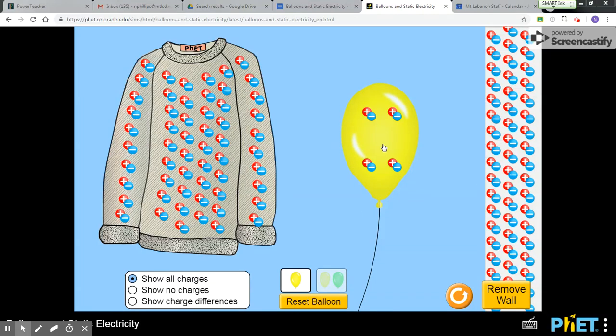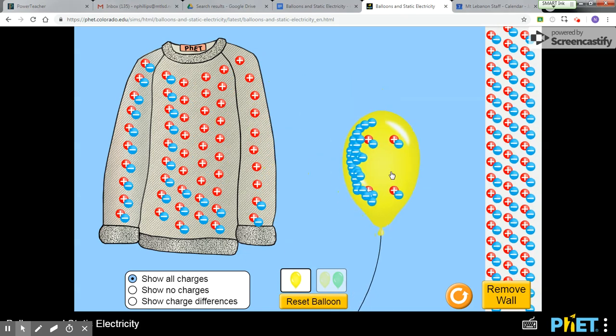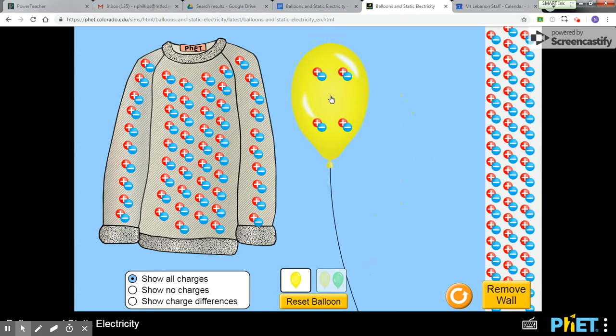Balloon static electricity. Neutral sweater, neutral balloon, neutral wall. Nothing's happening. Wait, let me reset. There's no traction, no traction.